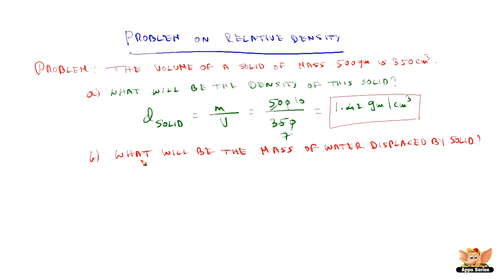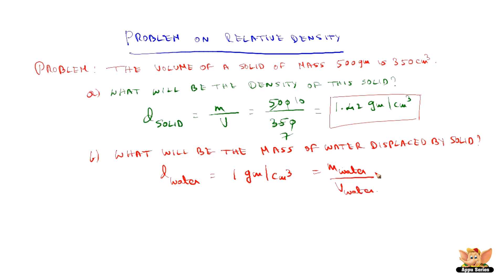Now let us find what will be the mass of water displaced by the solid. We know from Archimedes' principle that the volume of water displaced equals the volume of the solid. We know the density of water is 1 gram per cm³, which is mass of water divided by volume of water. The volume of water displaced is 350 cm³, the same as the volume of the solid as per Archimedes' principle.